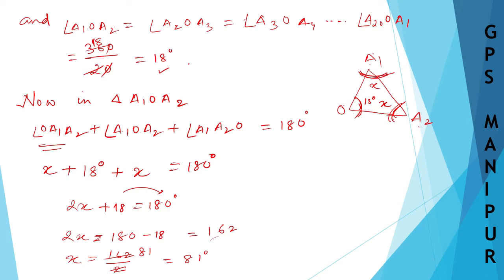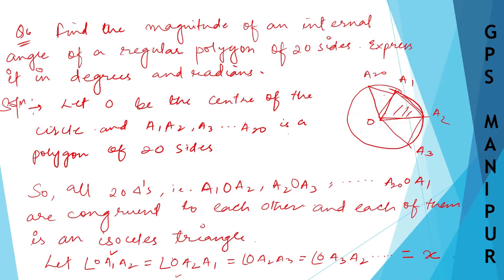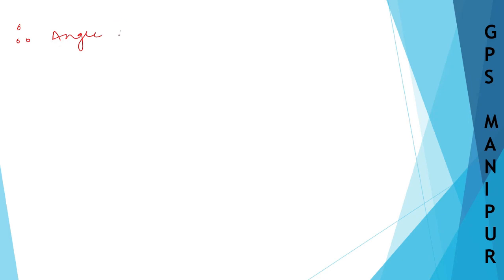We need to find the angle of the polygon — the magnitude of the internal angle. The internal angle of the polygon is 2X, because it consists of X from one triangle plus X from the adjacent triangle.